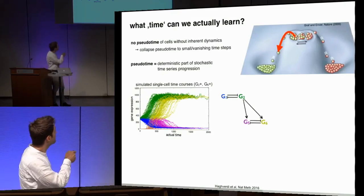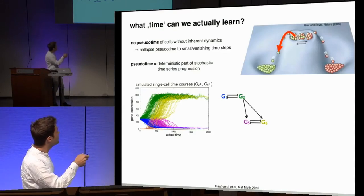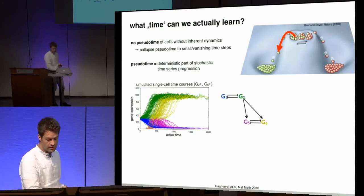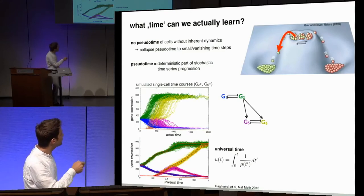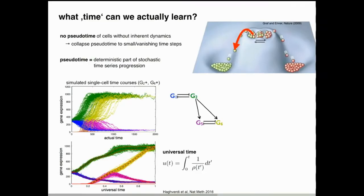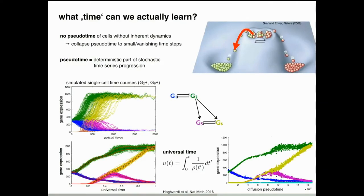Instead we have to average out this stochasticity and only learn the deterministic part rolling down. Mathematically, what you would do is normalize out by the density of staying in this particular state. We call this universal time — this is universal time applied to real time — and if you apply pseudotemporal estimation to just snapshot data you get exactly that picture. So this is the only thing we can estimate; we can never estimate stochastic exiting except if we have additional information such as real time.